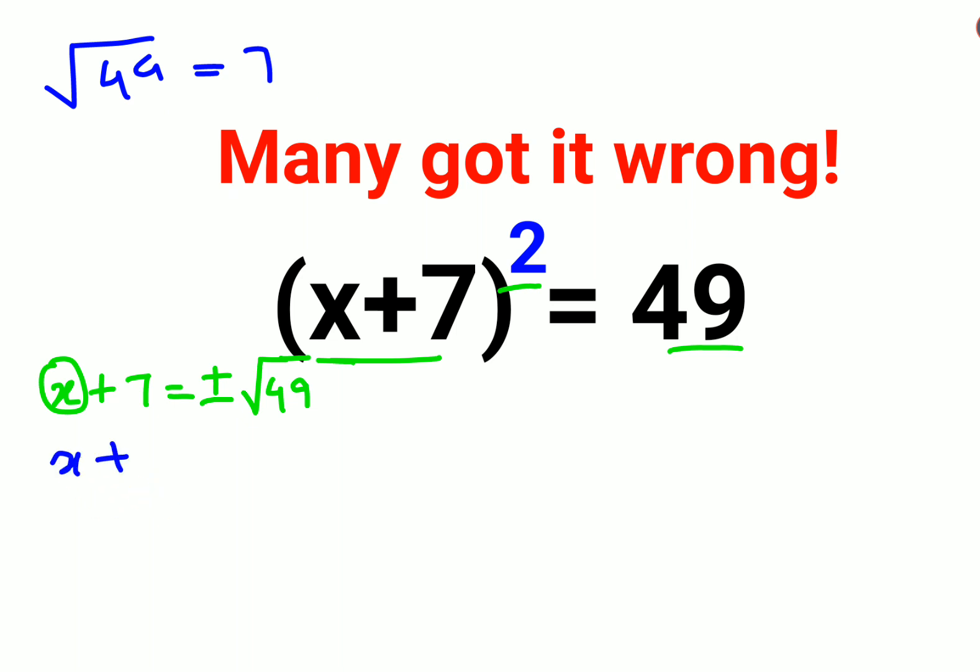So now we can say x plus 7 equals to just 7 or I can say x plus 7 equals to minus 7. Root of 49 is just plus 7 or minus 7.